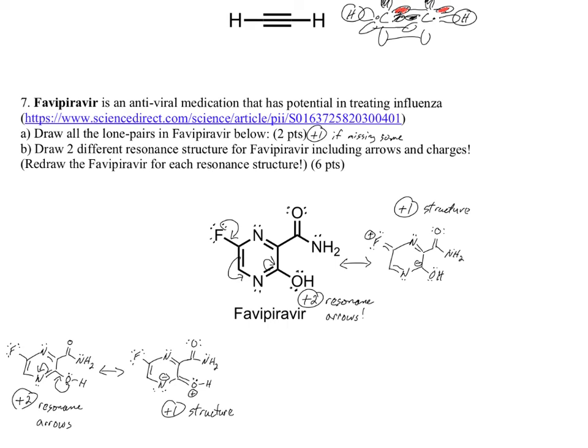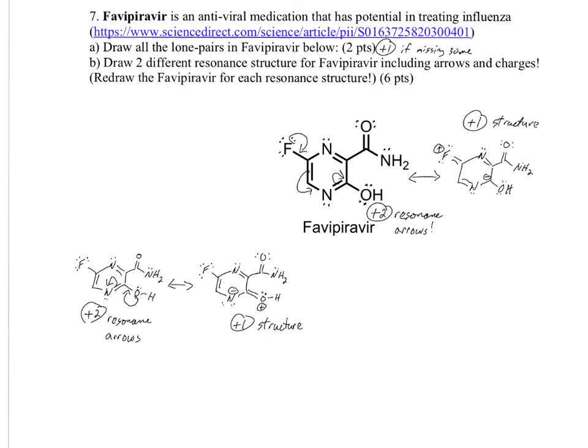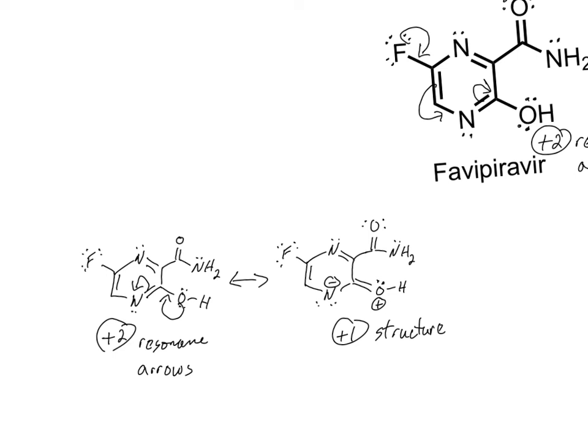Another possibility. I pushed electrons in from the oxygen. So pushing electrons into the ring from the oxygen. It makes new oxygen-carbon pi bond. The carbon-nitrogen pi bond breaks and put electrons there with a negative charge. So again, plus two for any of the arrows, plus one for the structure. Lots of possibilities here. I'm interested to see what you have.